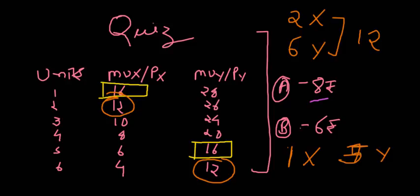The second condition is satisfied as well — diminishing marginal utility is operational, since as consumption of X and Y increases, the utility derived from both is coming down. This concludes the lecture on cardinal utility. For any questions or doubts, feel free to reach out at www.gurukul4commerce.com. Thanks for watching, and please share with your friends.